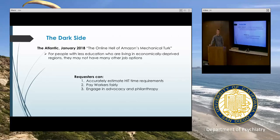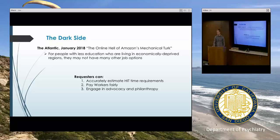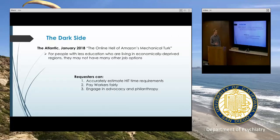A couple of ideas of things we could do as requesters: accurately estimate your hit time requirements — don't underestimate so that you take advantage of workers. Pay workers fairly — if they completed your task and data quality looked good, then pay them and help out their reputation. And if you so choose, especially for people interested in using MTurk a lot in the future, advocacy and charity in relation to the larger problem of economically deprived areas would obviously be helpful.